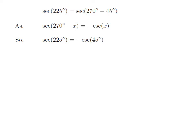Let us apply the above identity for secant of 225 degree. Here x is 45 degree, so secant of 225 degree is equal to minus cosecant of 45 degree.